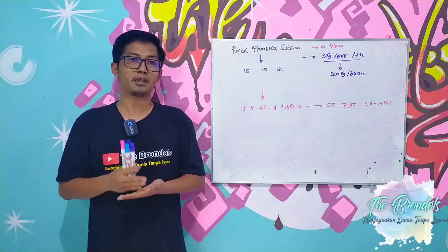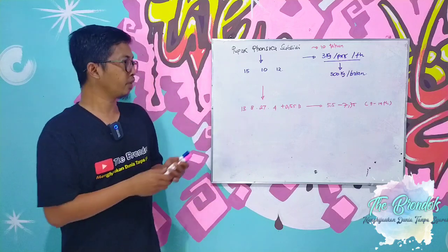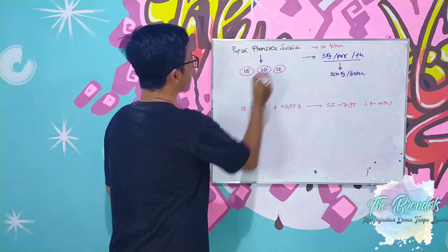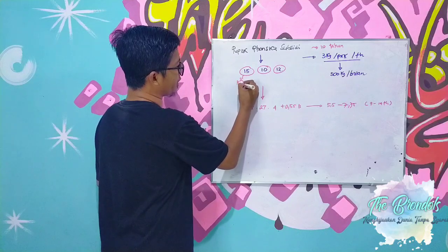This is caused indeed by the unfulfilled magnesium element in the Ponska 15-10-12 mechanism. We must understand that 15 is 15% nitrogen, 10% P2O5, and 12 is 12% K2O.